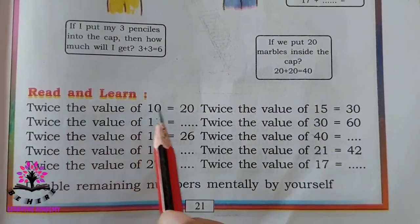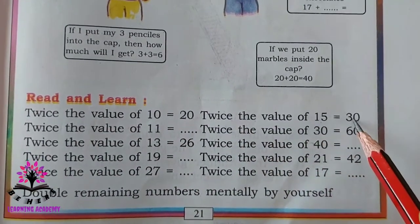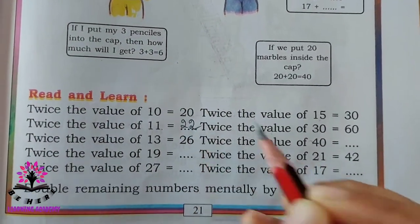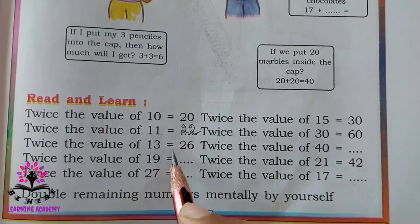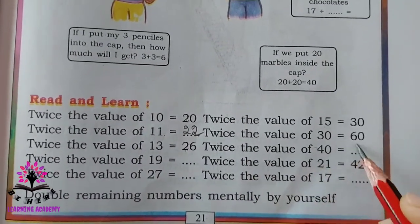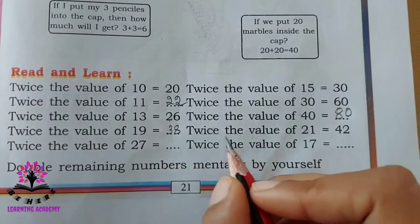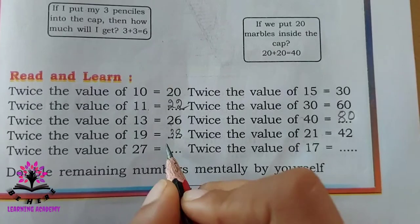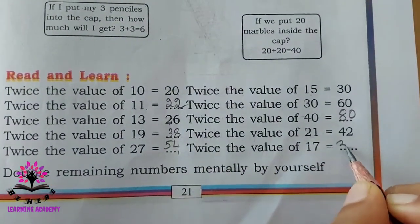Twice the value of 10 is 20, twice the value of 15 is 30, twice the value of 11 is 22, twice the value of 30 is 60, twice the value of 13 is 26, twice the value of 40 is 80, twice the value of 19 is 38, twice the value of 21 is 42, twice the value of 27 is 54, twice the value of 17 is 34.